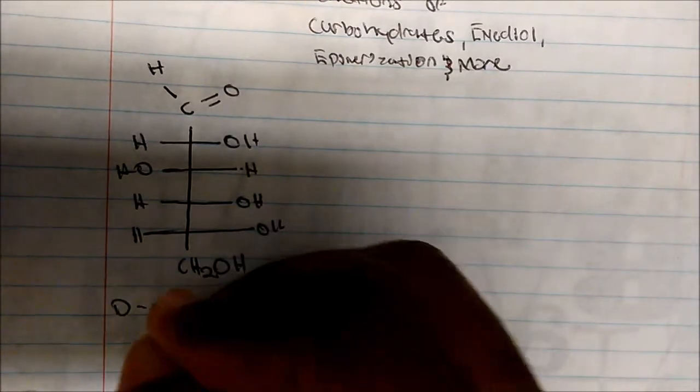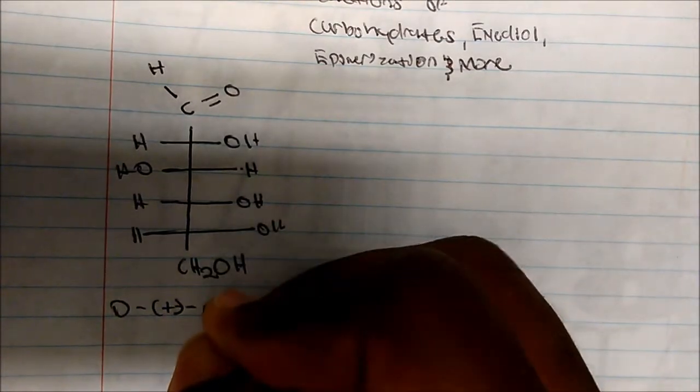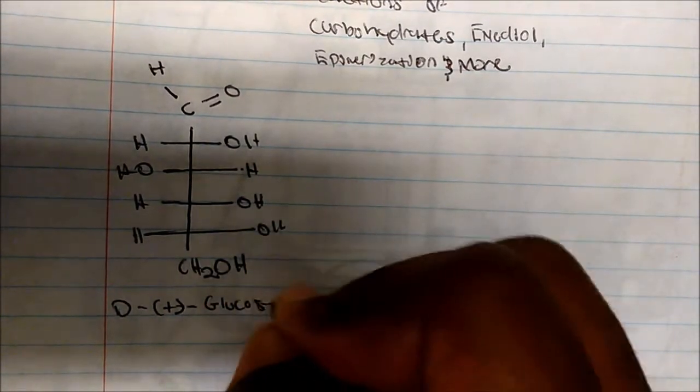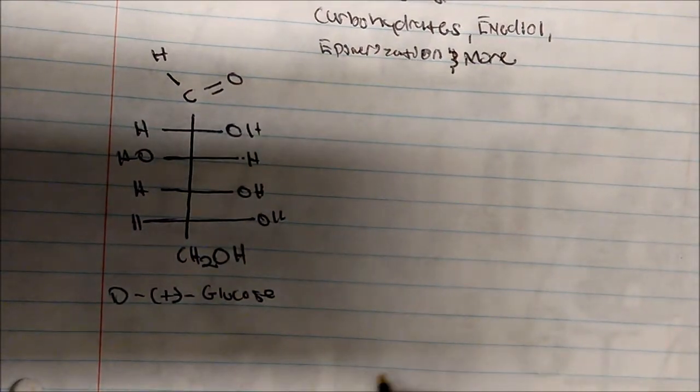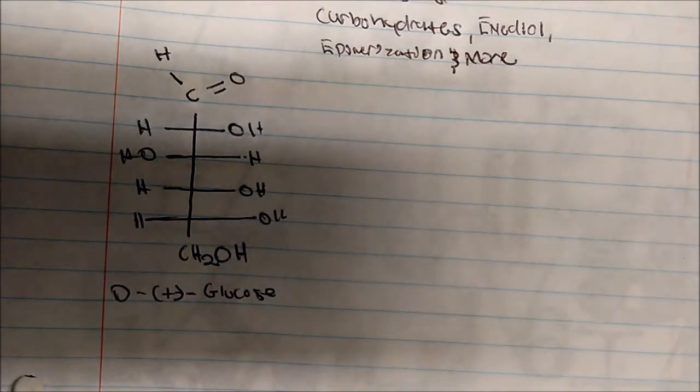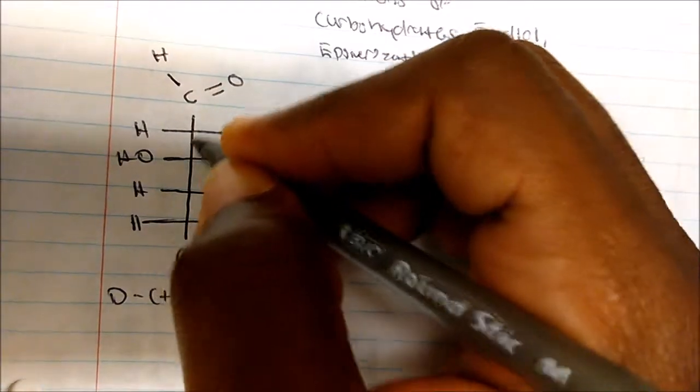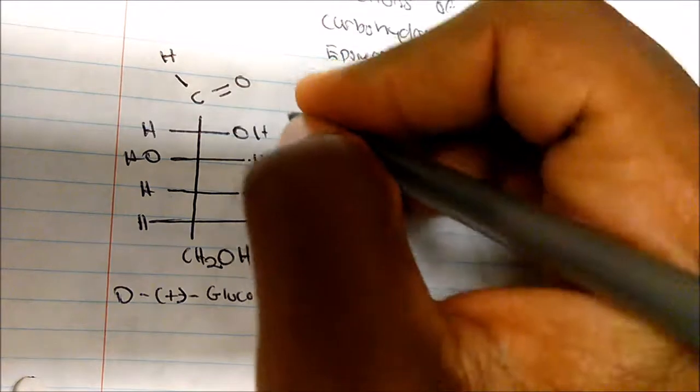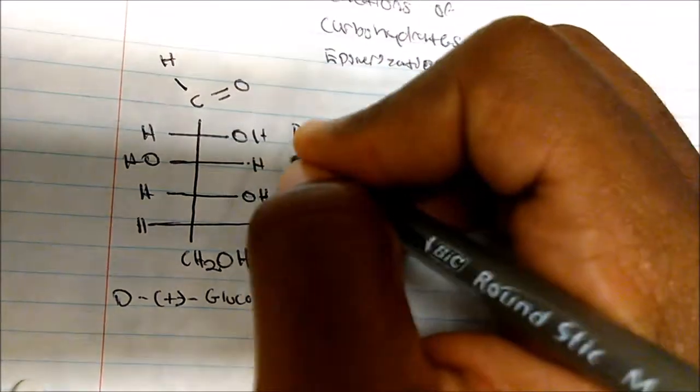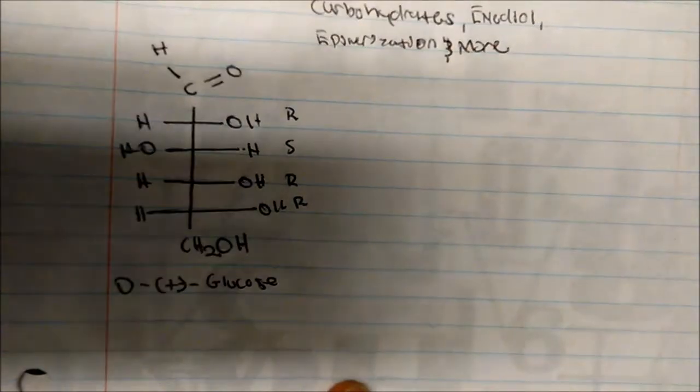This is called D-plus glucose. The reason it's plus is because it rotates plane-polarized light to the right. There are four chirocenters, and they are configured R, S, R, R — with the alcohols on the right being considered R. We need to know and memorize the structure of glucose.